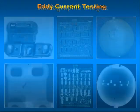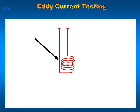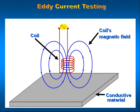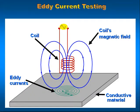Eddy current testing. Here we see an eddy current field being induced on the surface of a part. The part is a conductive material. Above the part, held perpendicularly, is an eddy current probe. As the probe approaches the conductive part, a magnetic field is created in the probe's coil.